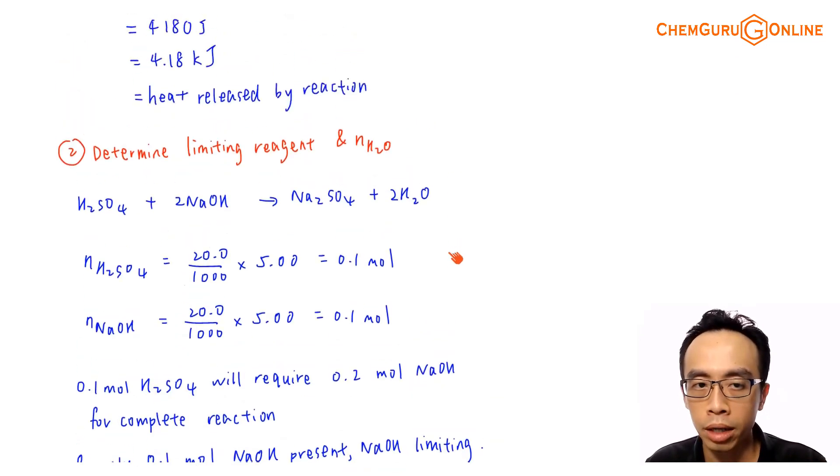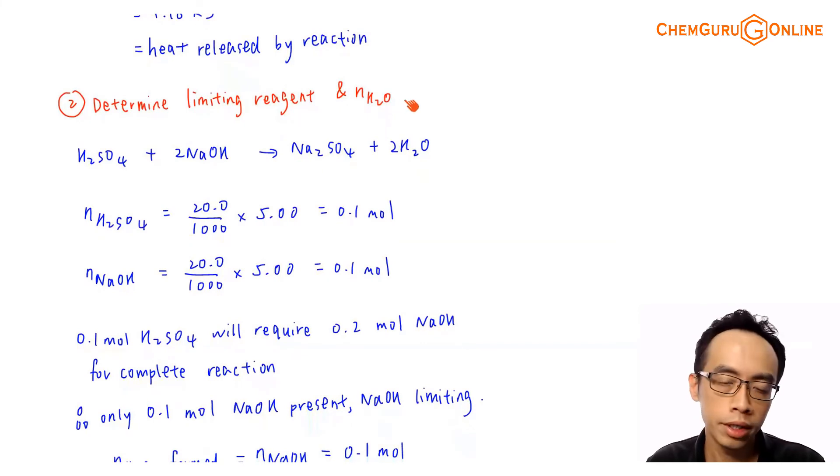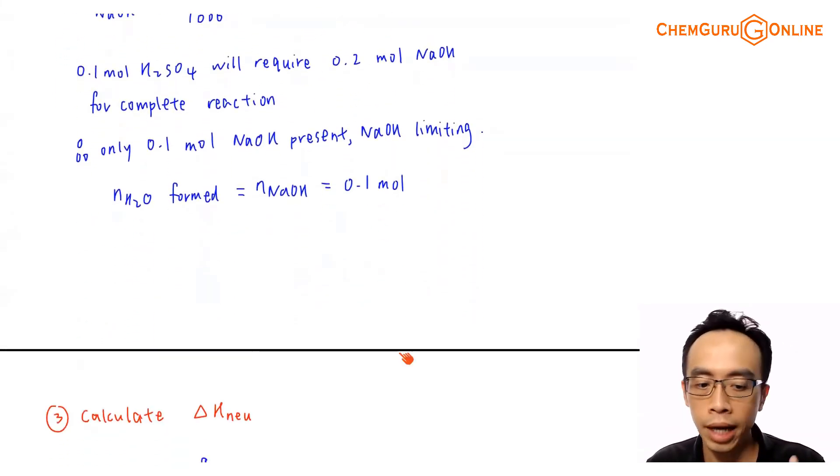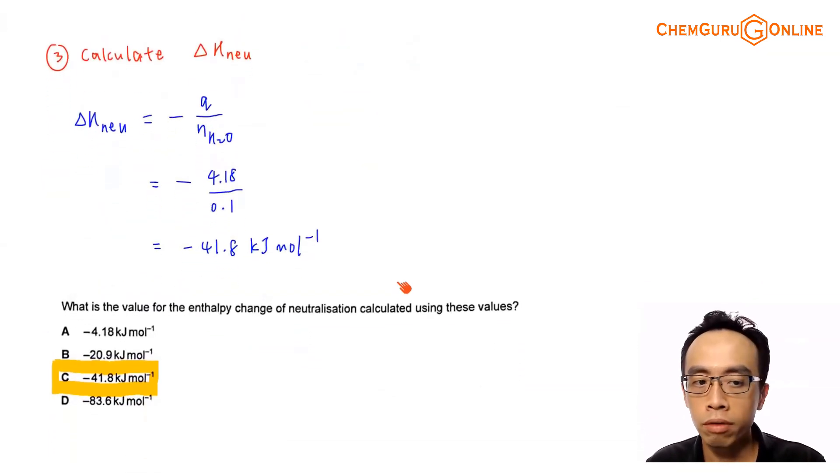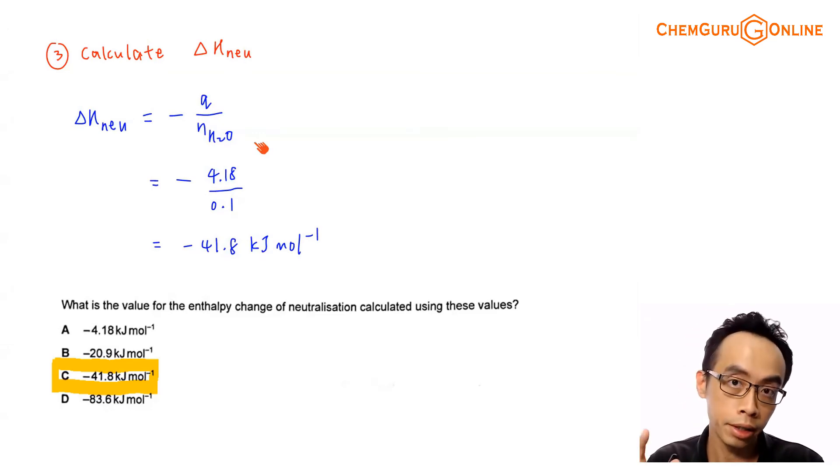So I've determined the heat released by the reaction. I've calculated the number of mole of water involved in this neutralization. Then what I can do is I can determine enthalpy change of neutralization, which is here. ΔH change of neutralization will just be a negative value because I know this is exothermic. There's an increase in temperature for the system. So reaction is exothermic. That's why the solution can absorb the heat and there's an increase in temperature. So it is a negative value because the reaction is exothermic.